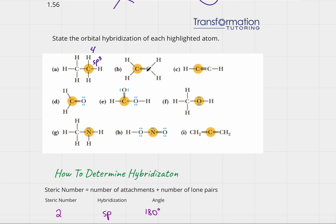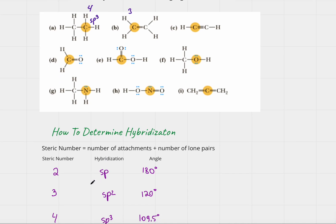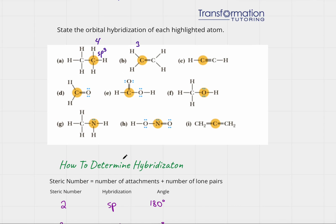For part b, how many attachments does this carbon have? It's attached to two hydrogens and one carbon, so it has three attachments. It doesn't have any lone pairs, so its steric number is three. If the steric number is three, the hybridization is sp2, so this carbon must be sp2.